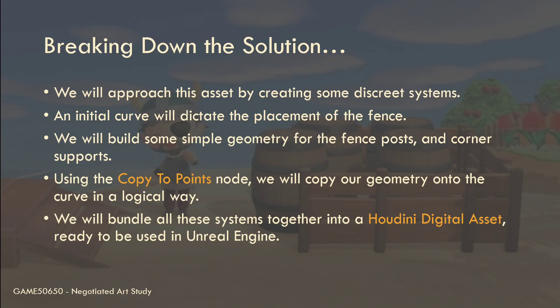If the level artist wants to place a fence around a building, all they need to do is draw down a simple curve and our procedural system will take care of the rest. That's the real beauty of these procedural systems — we're saving an awful lot of work. The game artist isn't going back to modify the fence to fit a different size building. This completely procedural approach really speeds up our workflow. So with that, let's get excited!